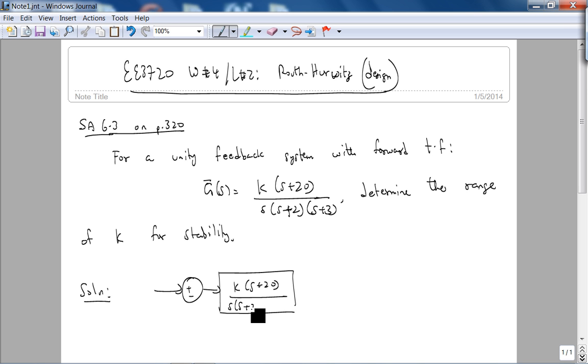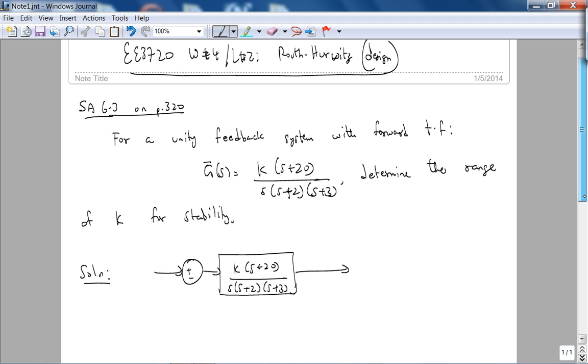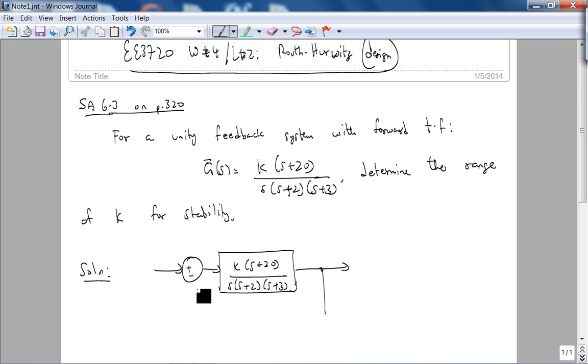And if you recall your lab 1, we actually had a second order polynomial in the denominator for our feedback system in our lab, so you were actually able to use the quadratic roots expression to find the range of k. In this case, if you look at the closed tube transfer function...